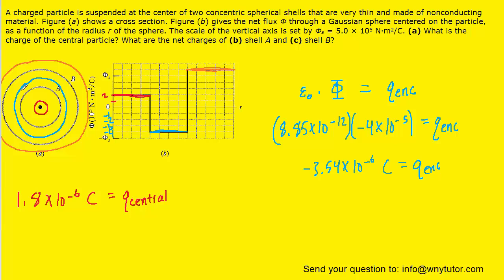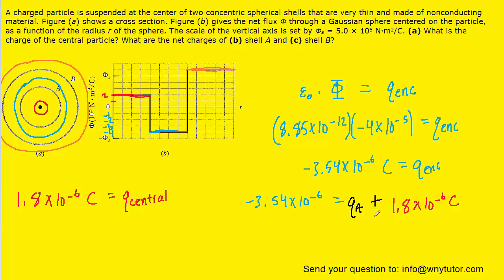The blue Gaussian surface encloses both shell A and the central charge, so the enclosed charge equals the charge on shell A plus the central charge. The central charge is 1.8 times 10 to the minus 6 Coulombs. Subtracting that value, we solve for the charge on shell A, getting approximately negative 5.3 times 10 to the minus 6 Coulombs.